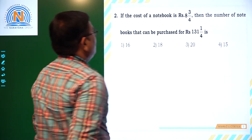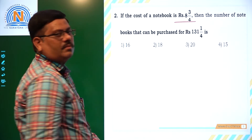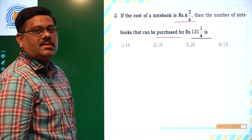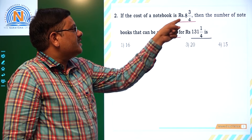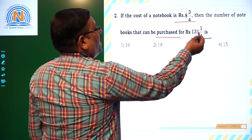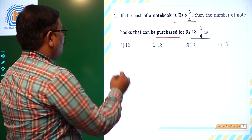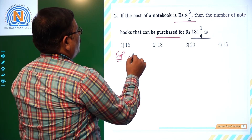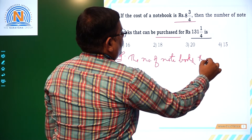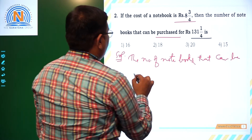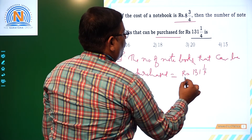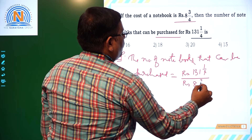Now let us see the next question. The cost of a good book is rupees 8 3/4. Then the number of books that can be purchased for rupees 131 1/4 is. So this is the amount I have — how many books can I purchase if each book costs rupees 8 3/4? That is the question. Total amount divided by cost of each notebook gives the number of notebooks. That is rupees 131 1/4 divided by rupees 8 3/4.